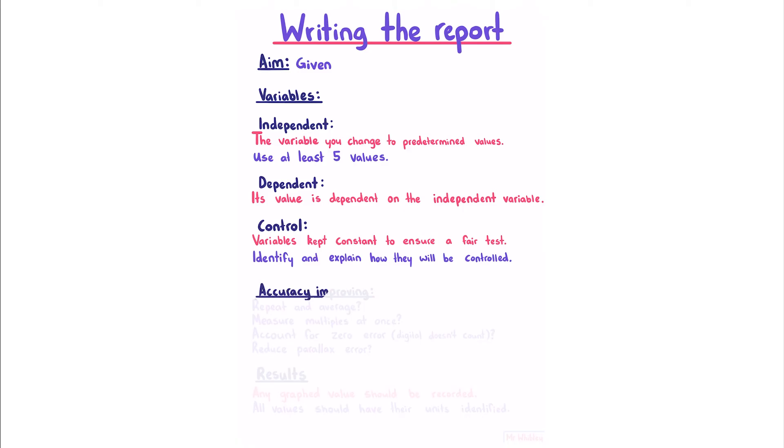You should record accuracy improving techniques, which depending on the experiment you're doing, could include repeating and averaging, such as recording a duration multiple times and averaging the result, measuring multiples at once, such as measuring 10 swings of a pendulum instead of just one. You might need to account for zero error, but note that digital doesn't count, and you may also need to reduce parallax error.